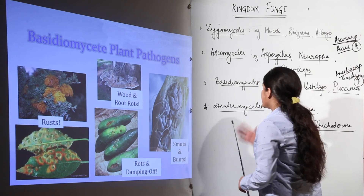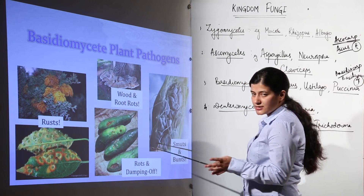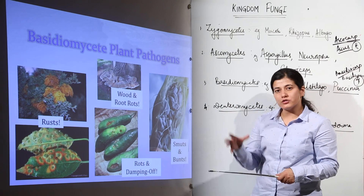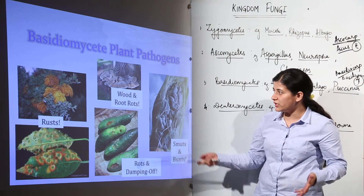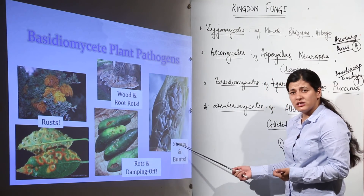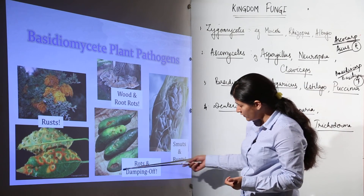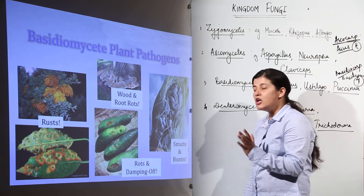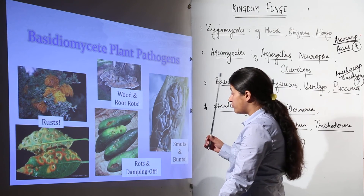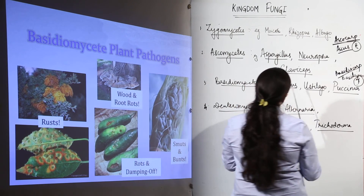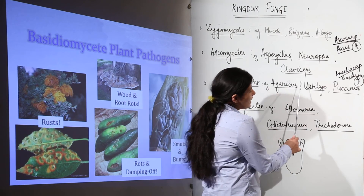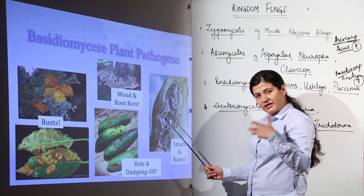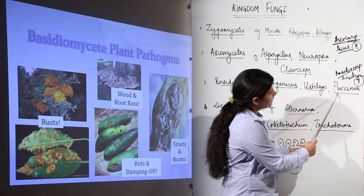Basidiomycetes are responsible for smuts and rusts in plants, and they are very notorious — farmers are very tired of the rusts and smuts which destroy their crops. You can see rusts developing on wood, smuts destroying corn, and cucumbers being destroyed. That reddish part you see is these notorious fungi, which are very harmful for crops.